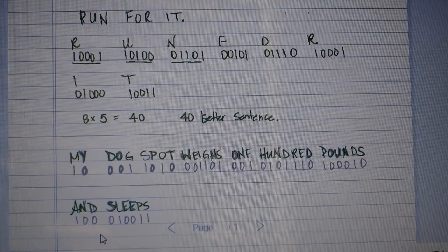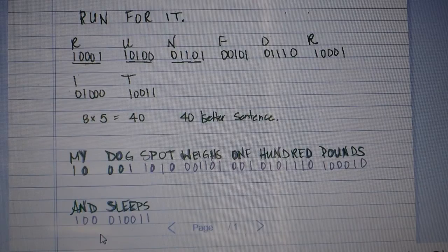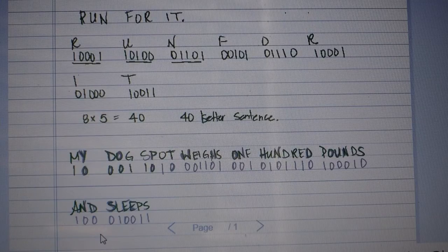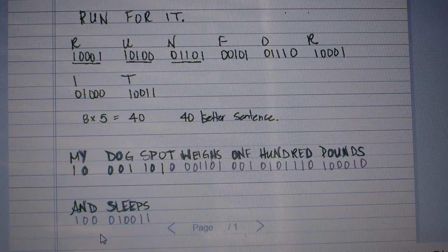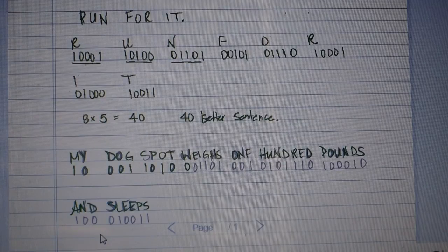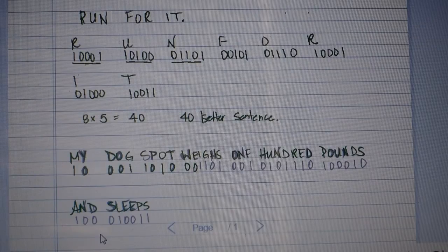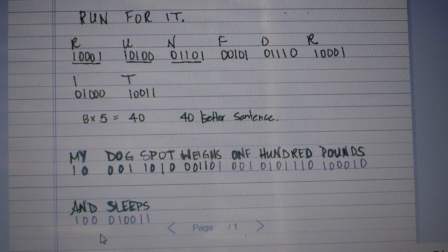Okay, so my first five letters would represent the R, so I have 10001. My second set of numbers is the U, which is 10100. Notice how I keep going through my letters, through my sentence, and so the letters will overlap some. Now I'm on the N, so that is 01101.